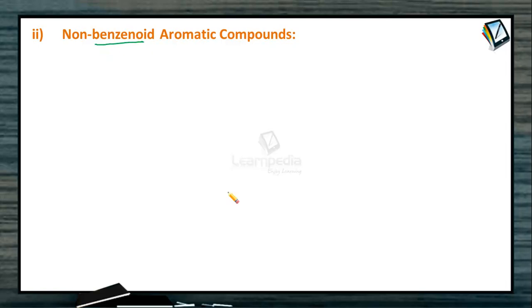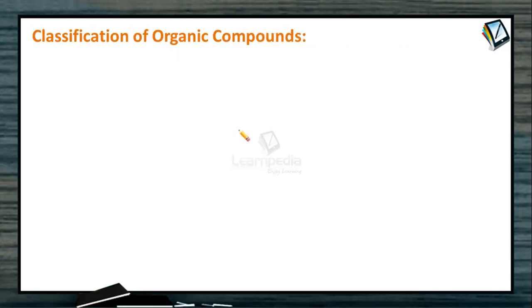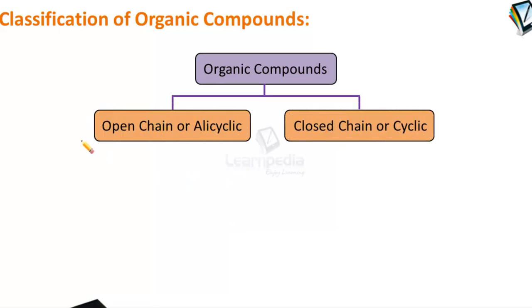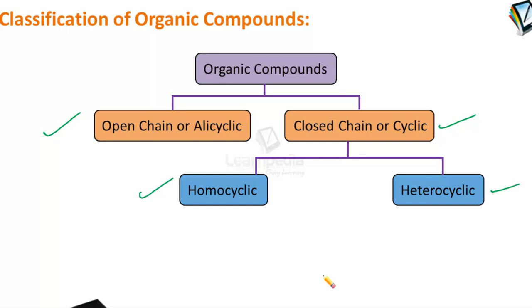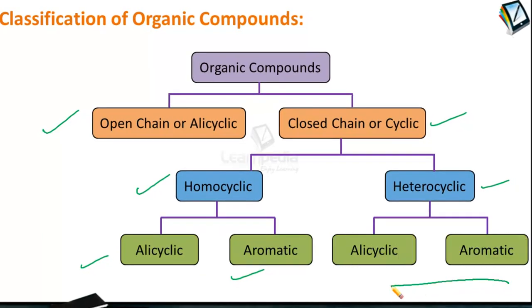Non-benzenoid aromatic compounds are aromatic compounds that do not contain a benzene ring. They are aromatic in nature — with alternate double and single bonds — but do not have a benzene ring. A full discussion of aromaticity will be covered separately under benzene chemistry. One good example of a non-benzenoid aromatic compound is azulene. So far we have covered open chain and closed chain, and within closed chain: homocyclic (alicyclic and aromatic) and heterocyclic.